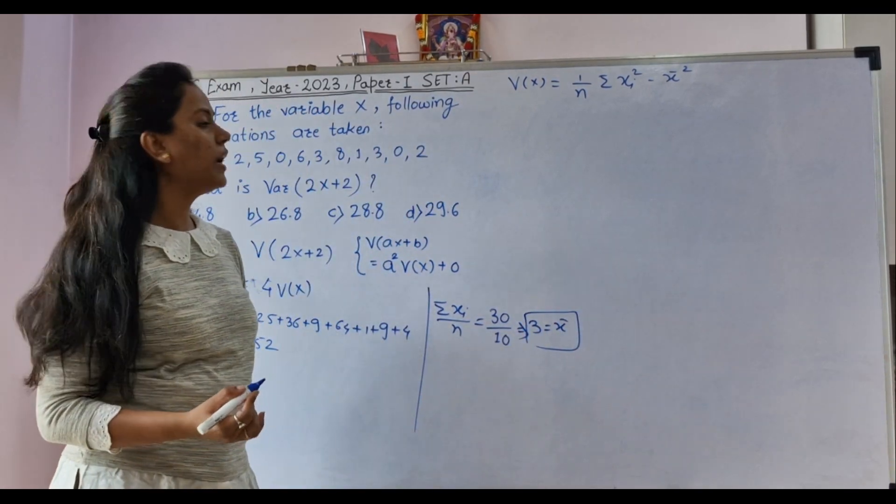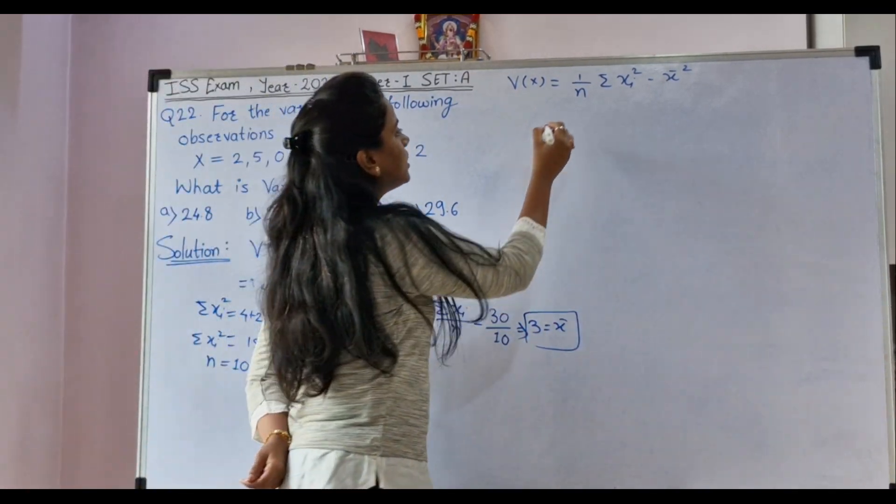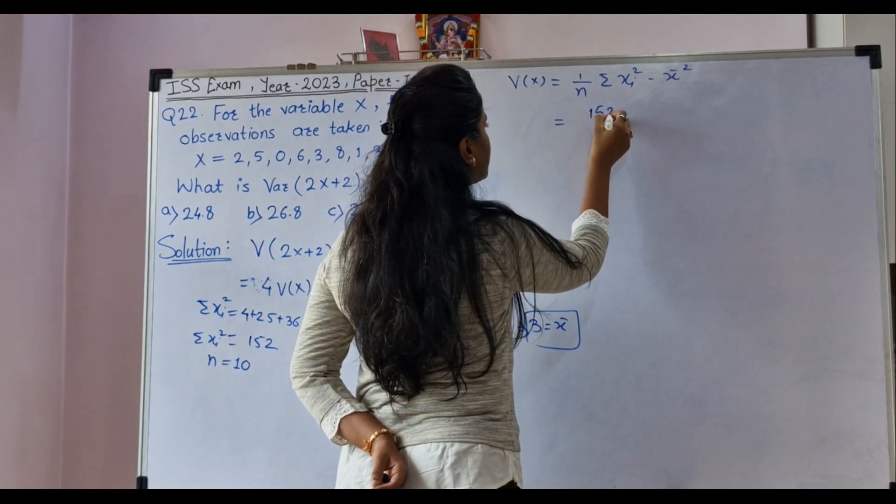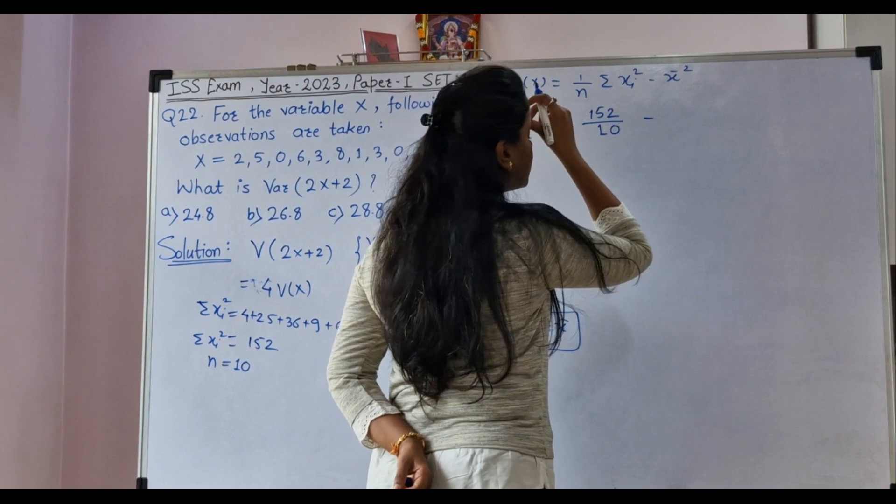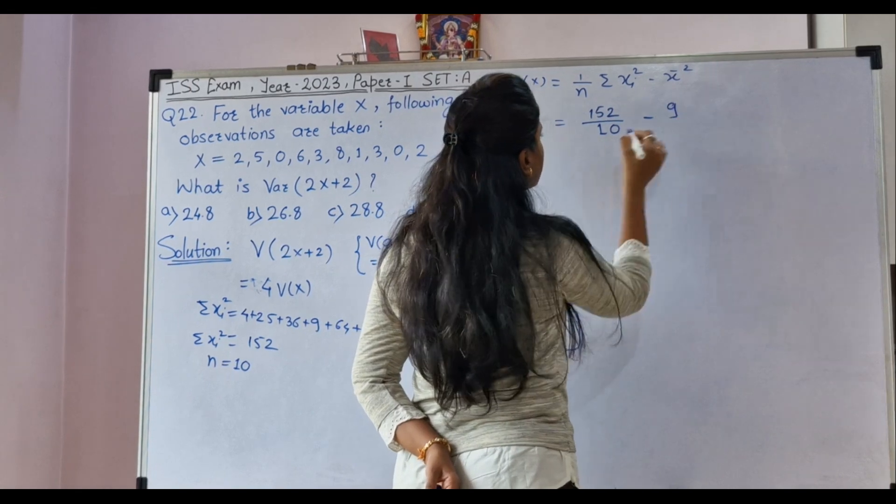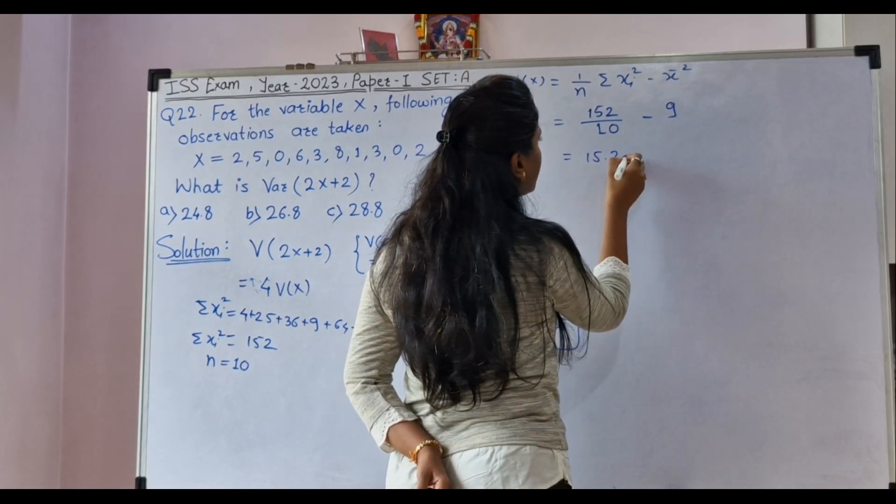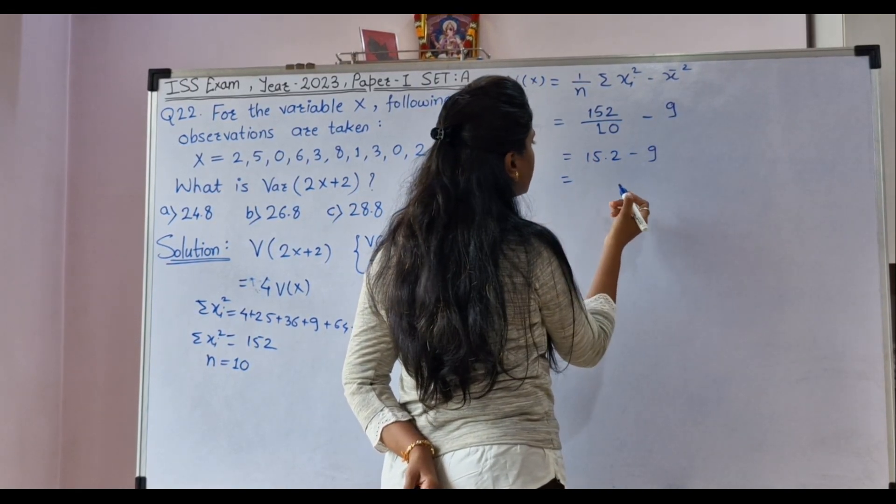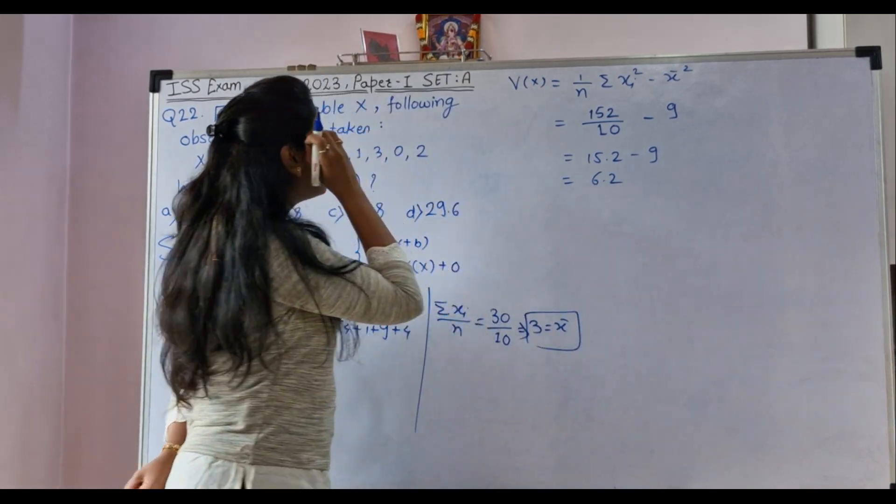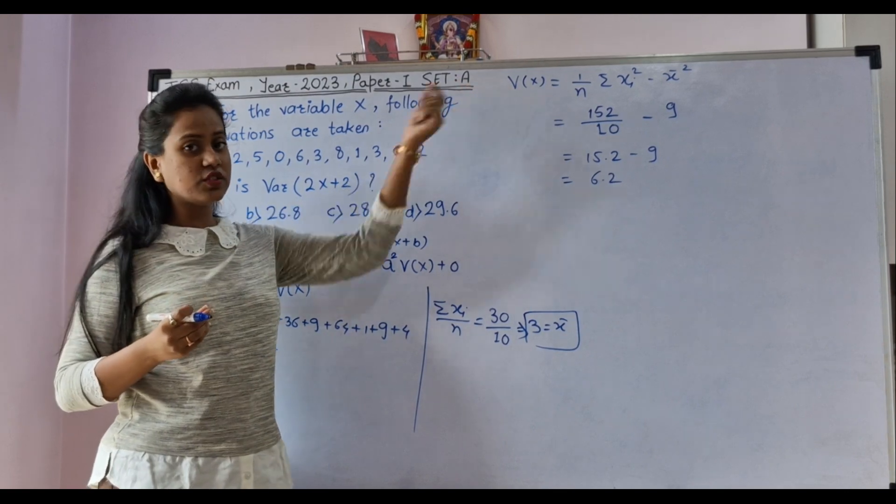Now let's solve it further. We got here 152 divided by 10 minus 3. Mean is 3, we have to take it square. So, it is 9. 15.2 minus 9. So, we will get here 6.2. But do we want to calculate just variance of X? No.